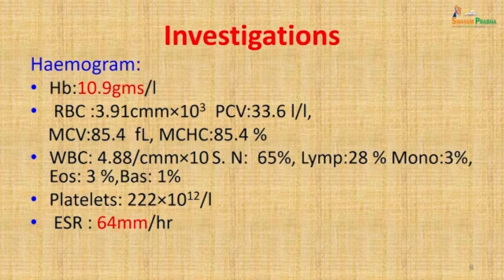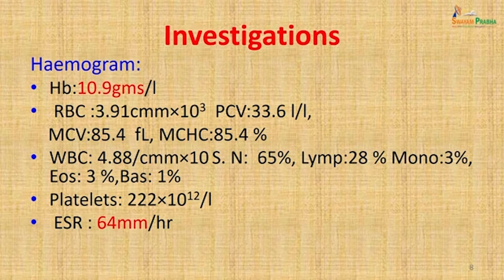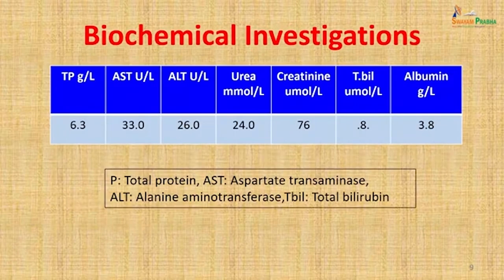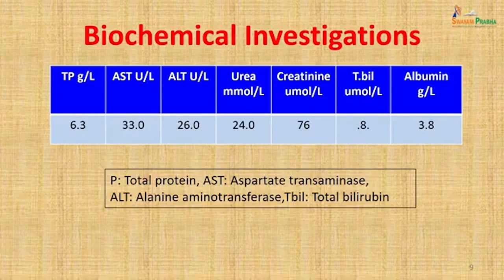Investigations were planned for the patient. His hemogram showed hemoglobin of 10.9 grams per liter — low. The rest of his parameters were almost near normal; no leukocytosis was observed, platelets were within the normal range, and ESR was raised. Biochemical investigations including total protein, aspartate transaminase, alanine aminotransferase, total bilirubin, urea and creatinine — tests for renal and liver function — were all normal.